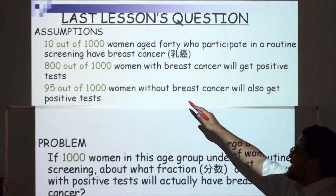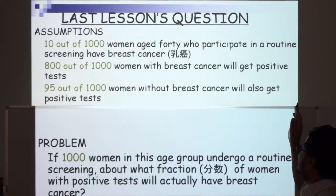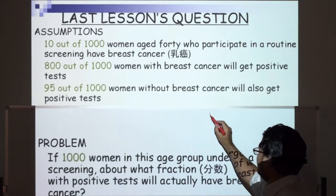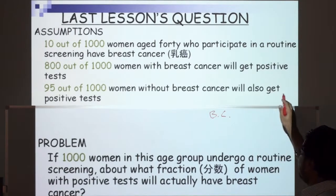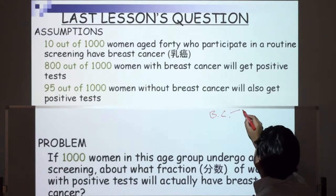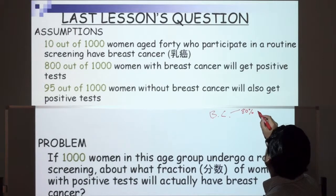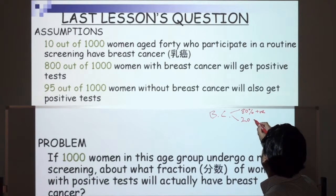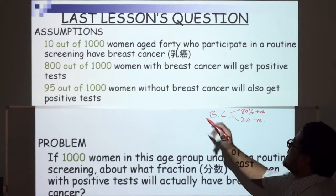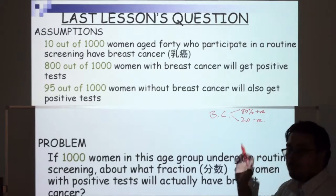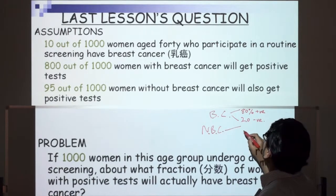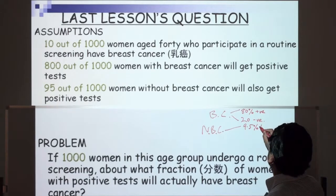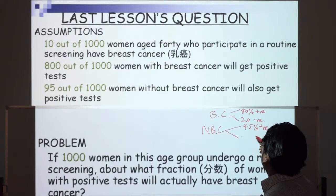We had these assumptions: 10 out of 1,000 women aged 40 who participate in a routine screening have breast cancer. 800 out of 1,000 women with breast cancer will get positive tests — that's 80% positive and therefore 20% get a negative test. 95 out of 1,000 women without breast cancer will also get positive tests, so 9.5% will get a positive and therefore 90.5% get a negative test.